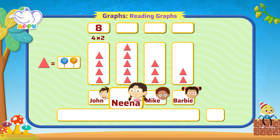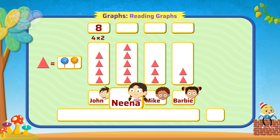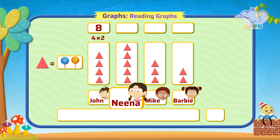There are five triangles for Nina. Since one triangle represents two lollipops, Nina has five times two, that is equal to ten lollipops.